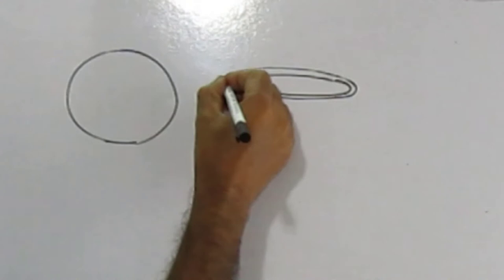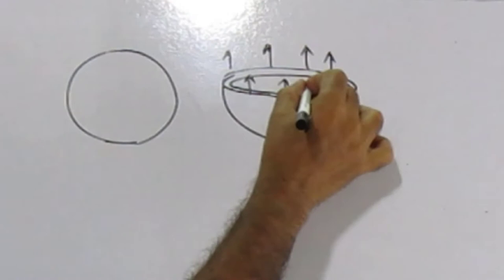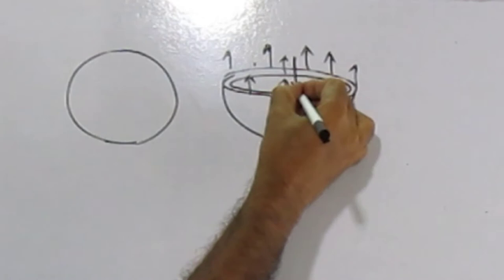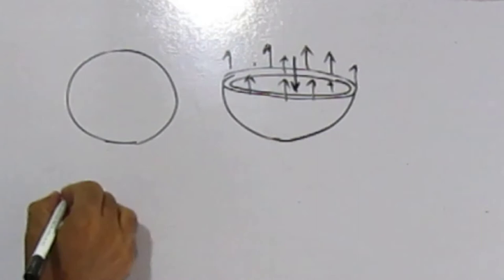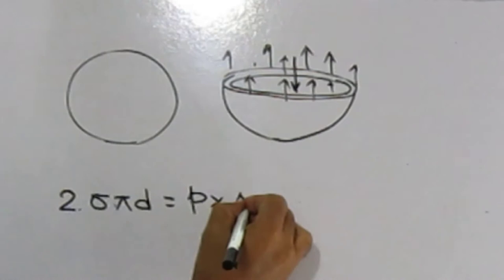Surface tension on a hollow bubble. A hollow bubble like a soap bubble in air has two surfaces in contact with air — one inside and one outside — so two surfaces are subjected to surface tension. Drawing the free body diagram: surface tension force acts on two layers, and equating upward and downward forces: 2 × sigma × pi × d equals P × pi/4 × d², giving P equals 8 sigma divided by d.